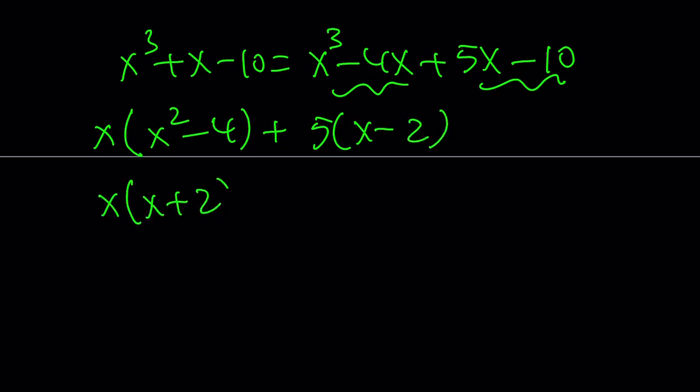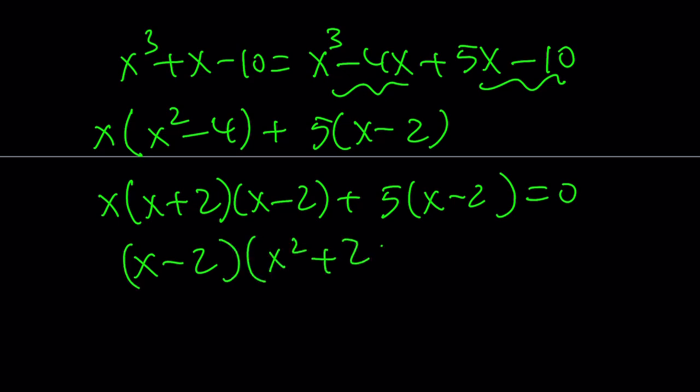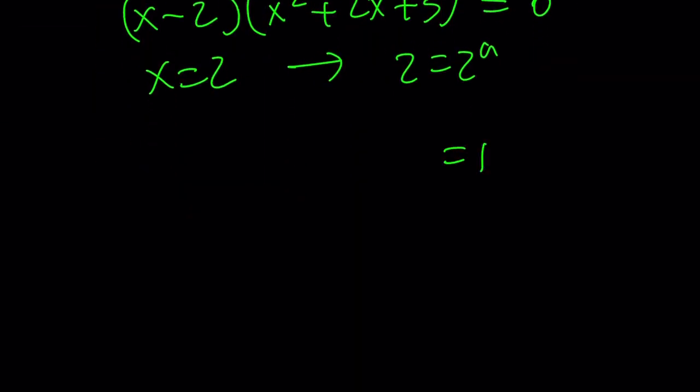If you said that, you guessed it right. x plus 2 times x minus 2, 5 times x minus 2. Of course, x minus 2 is a factor, so everything works. And we get x squared plus 2x plus 5 directly. More directly, sort of. But anyways, this gives us x equals 2. And 2 is 2 to the power of a. And this gives us a equals 1.